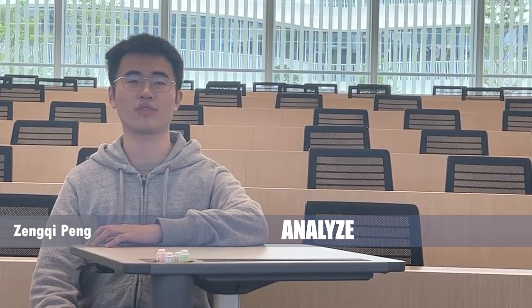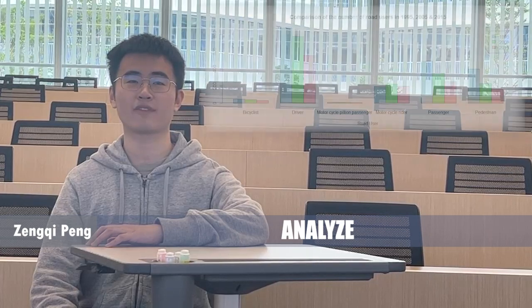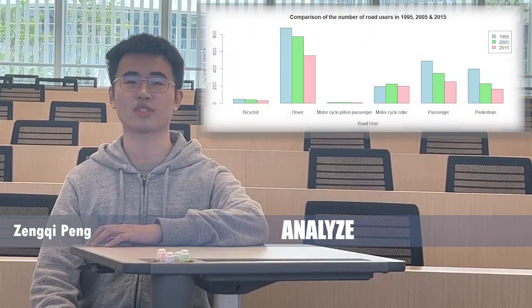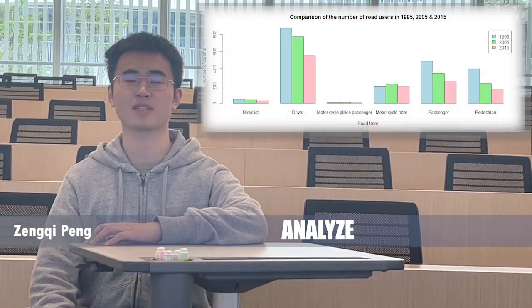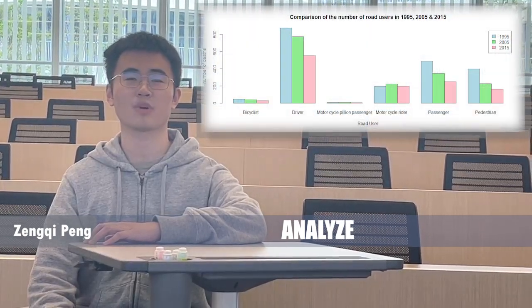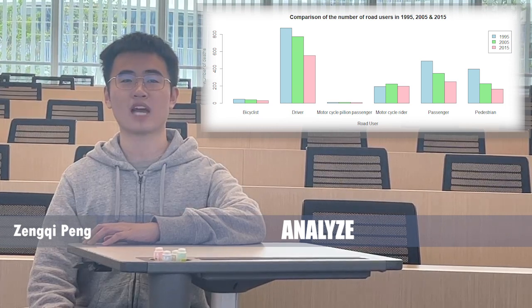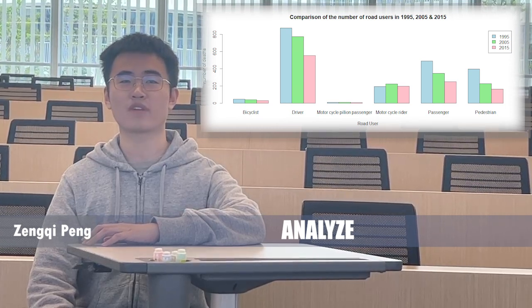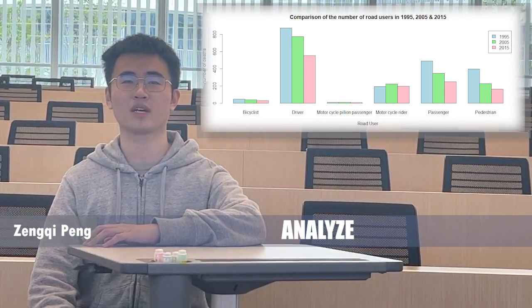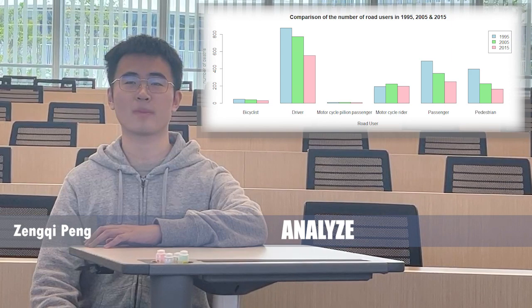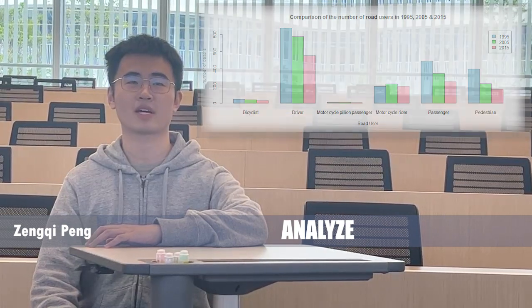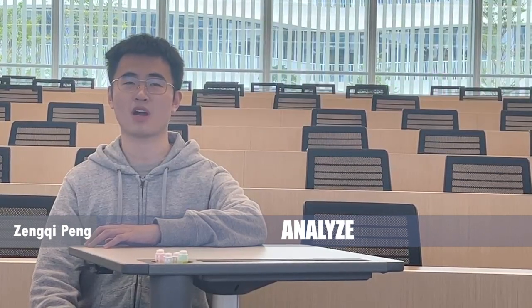According to the following graph, pedestrians are the main transport participants that are also vulnerable. Sometimes, when the driver is tired or distracted, pedestrians can be hit by high-speed cars.